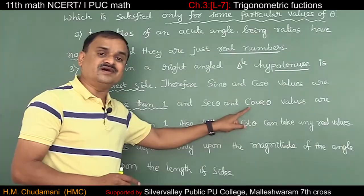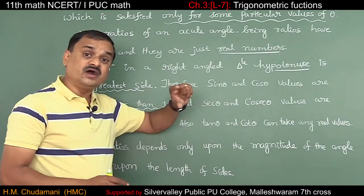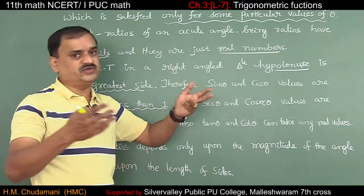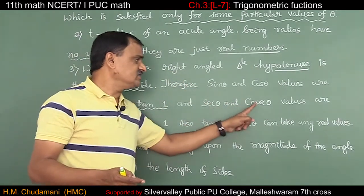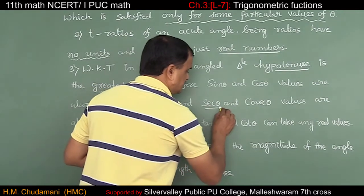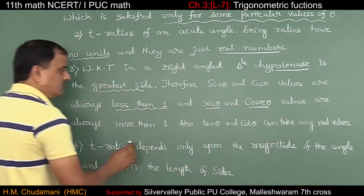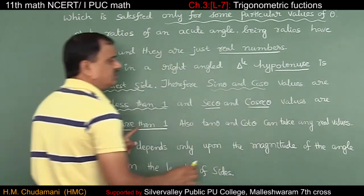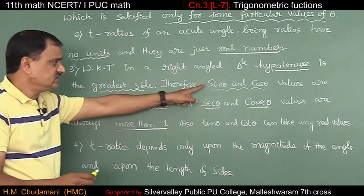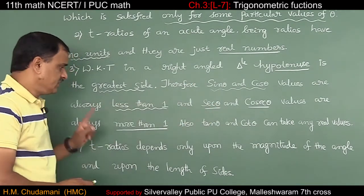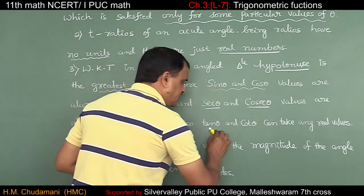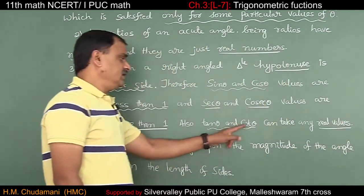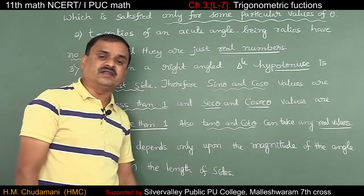Whereas, secant θ and cosecant θ — look at the definition of secant: hypotenuse divided by adjacent. Since the numerator is larger, secant θ and cosecant θ values are always more than 1. Meanwhile, sin θ and cos θ are less than 1 since hypotenuse is in the denominator. Also, tan θ and cot θ can take any real value — from minus infinity to plus infinity.